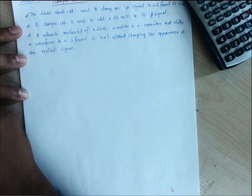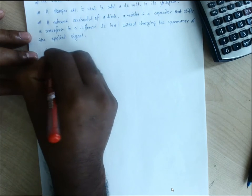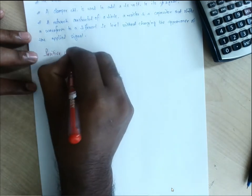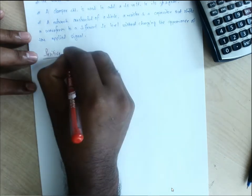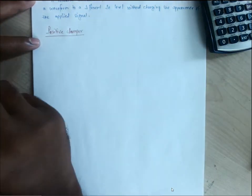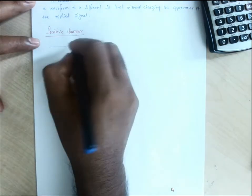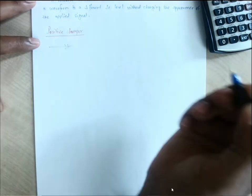So our applied signal will remain the same in the output, but it will simply shift to a different DC level — we simply add some DC voltage with the existing input signal. So let us go with our first circuit, that is our positive clamper. It consists of a diode, resistor, and a capacitor. The capacitor is the main constituent of the clamper circuit.